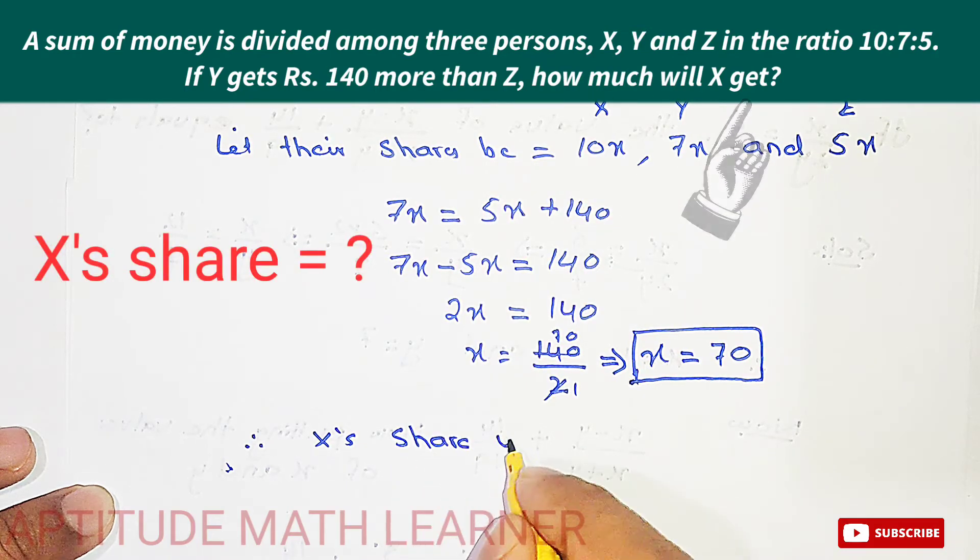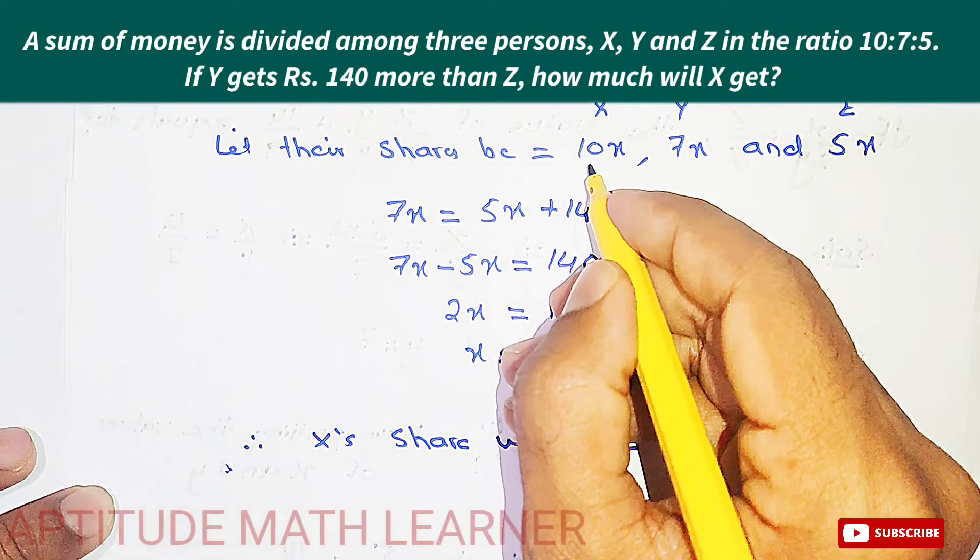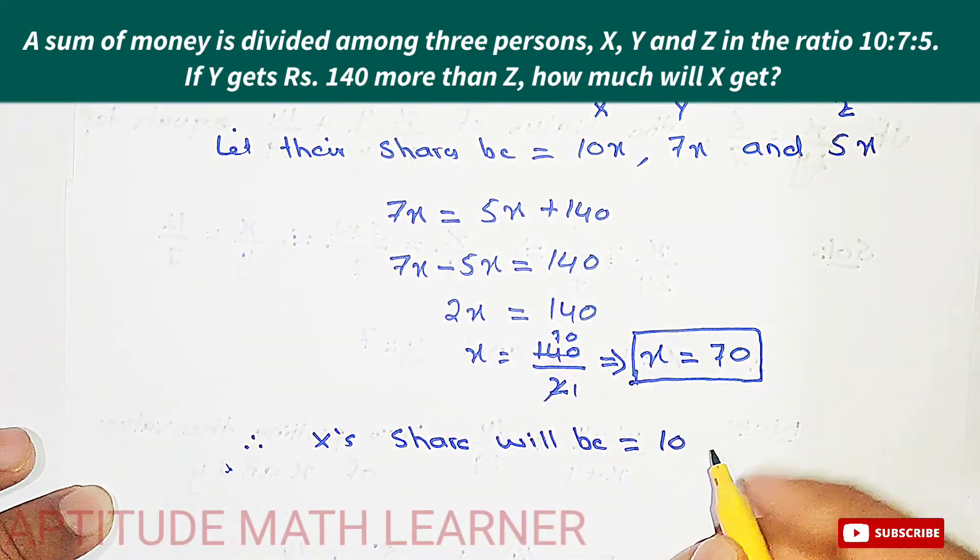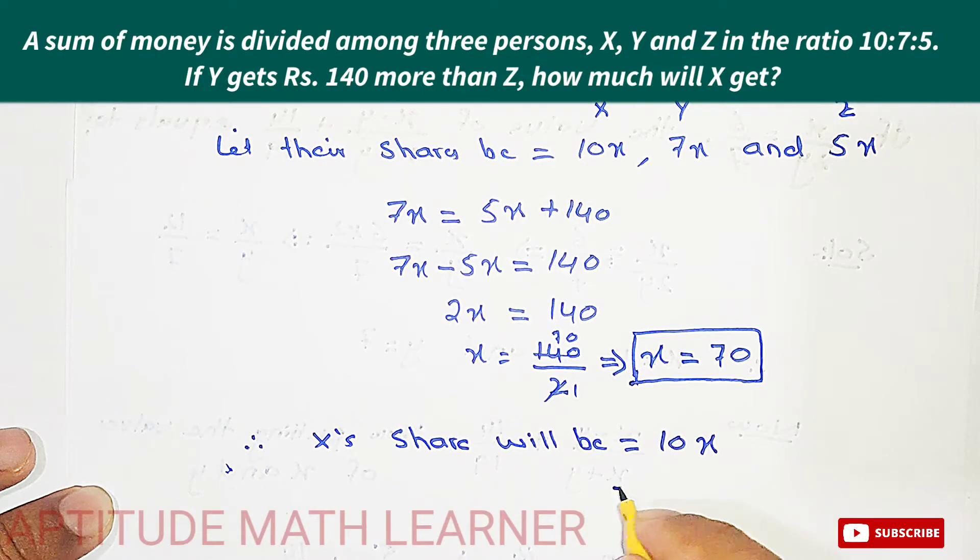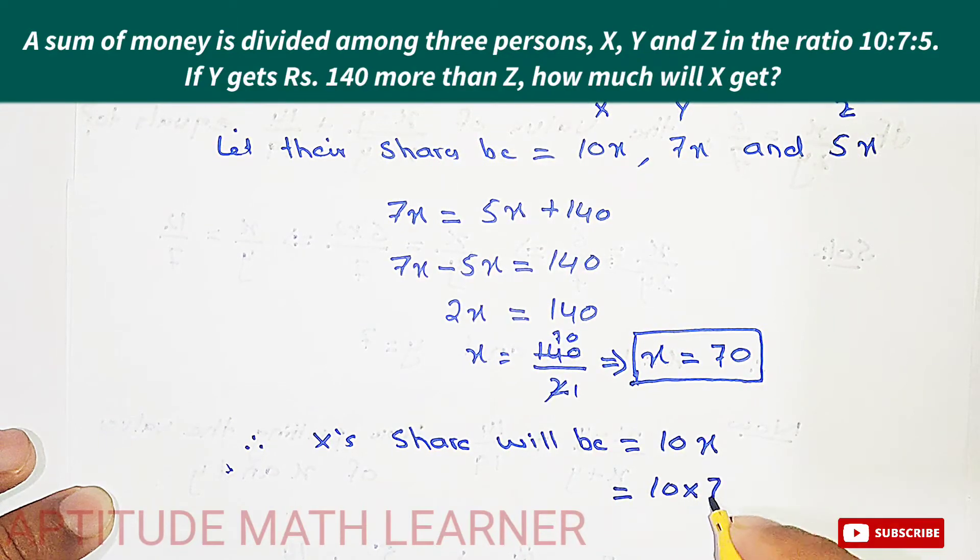Therefore, X's share will be 10x. So 10 multiplied by 70, and we get...